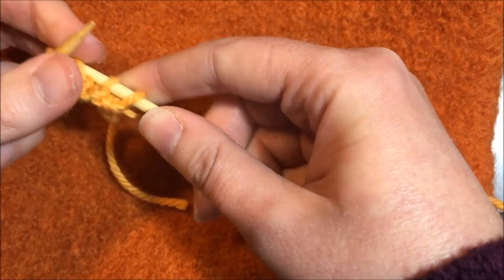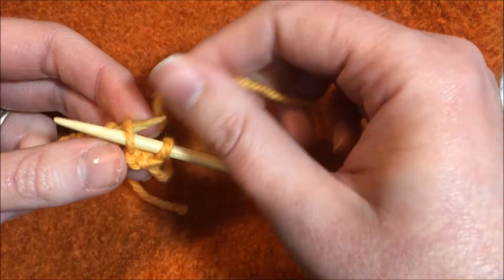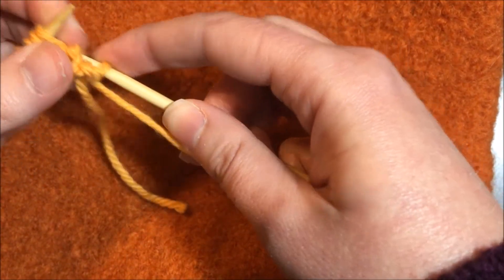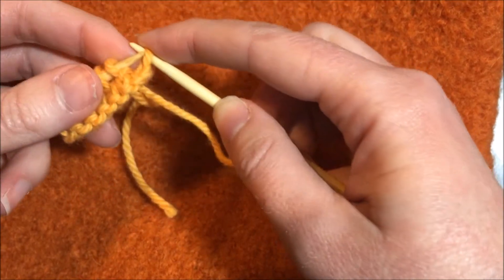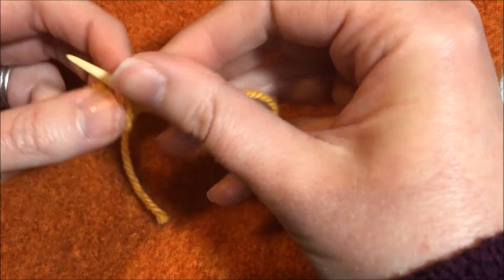Just remember to go through the back loop as you form the stitch and to take the yarn up over the needle from the back in a counterclockwise motion. That's what keeps it from twisting the stitches.